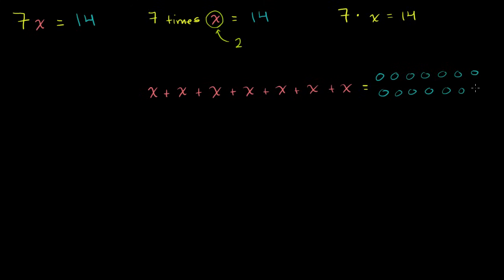In general, whenever you simplify an equation down to a coefficient — a coefficient is just a number multiplying the variable — times a variable equal to something else, what you want to do is divide both sides by that coefficient. So if you divide both sides by 7, then 7 times something divided by 7 is just going to be that original something. The 7's cancel out, and 14 divided by 7 is 2.